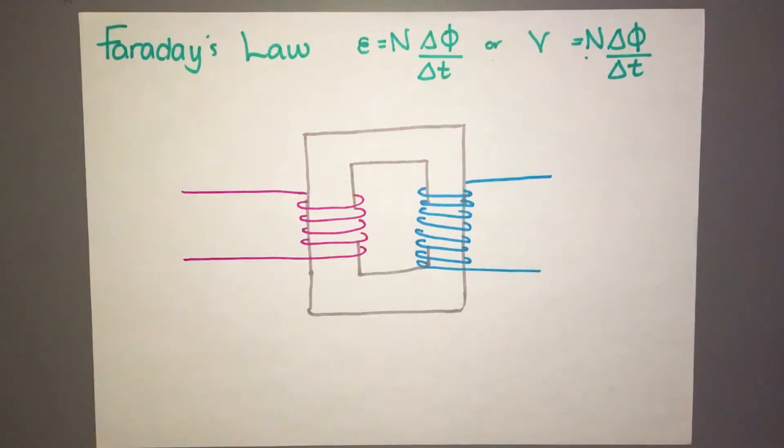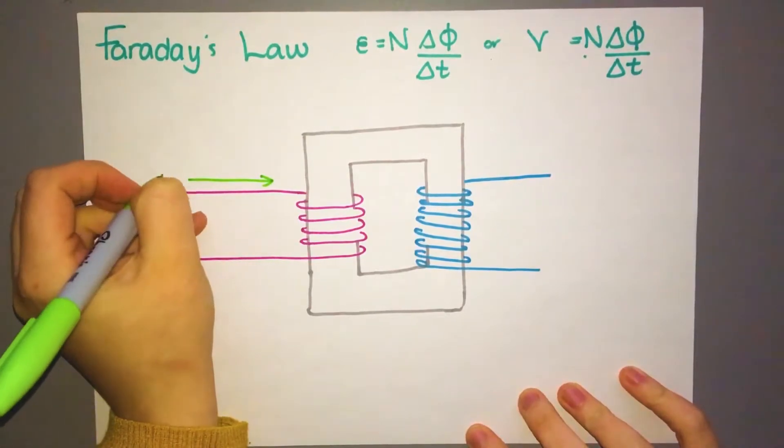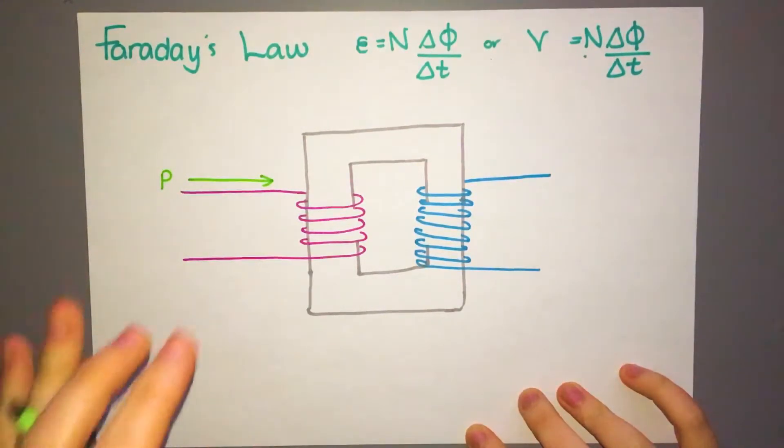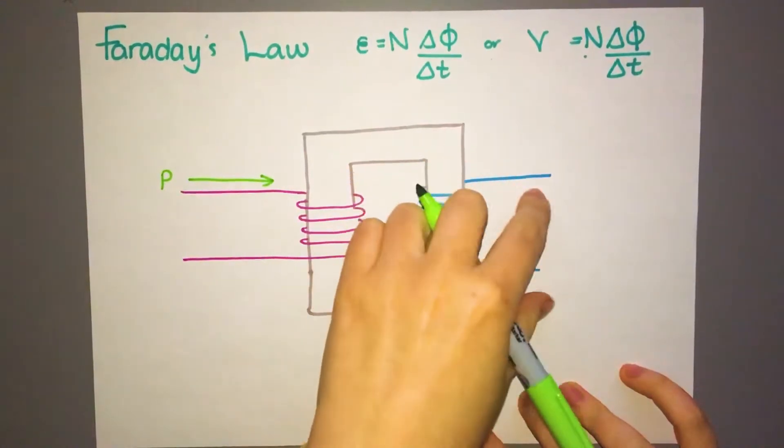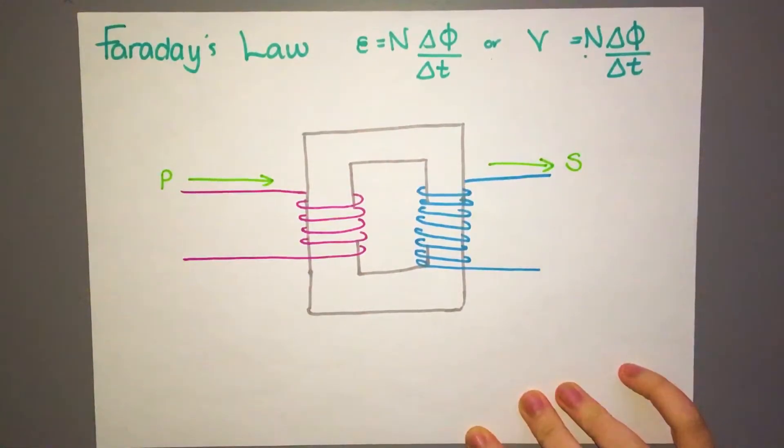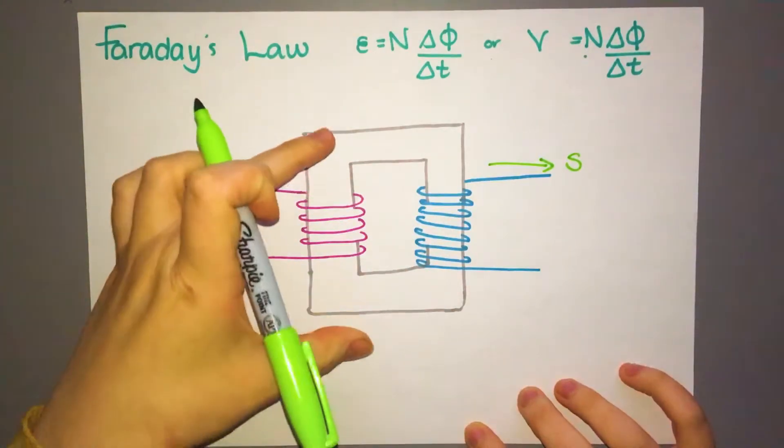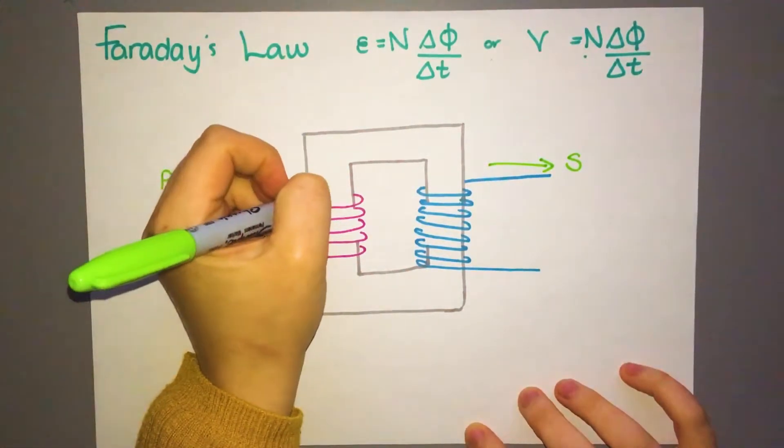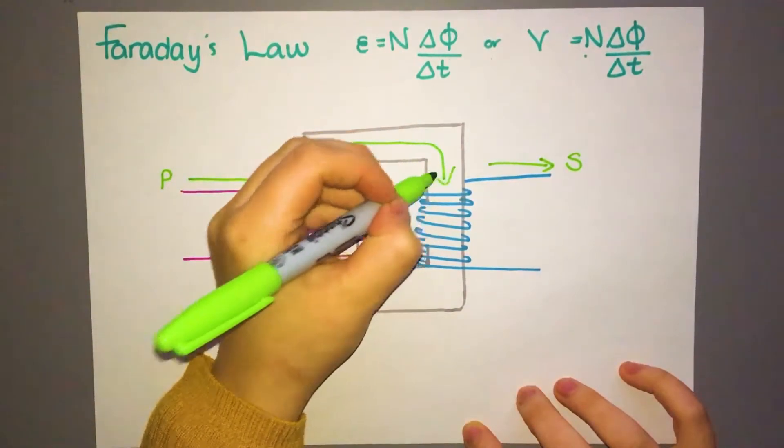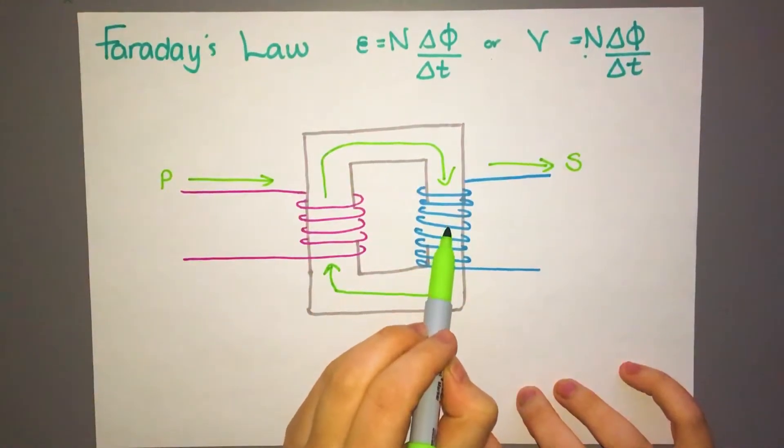Now if we have an alternating current coming in on the primary side, so I'll label this P for primary, then we also need to have an alternating current matching it coming out the other side, which is going to be our secondary side. Now the way this works is that when the alternating current comes in on the primary side, then it induces magnetic flux inside this iron core. So this is basically just a great big block of iron with coils wrapped around it. So it induces magnetic flux inside the core, which then in turn induces an alternating current on this side.